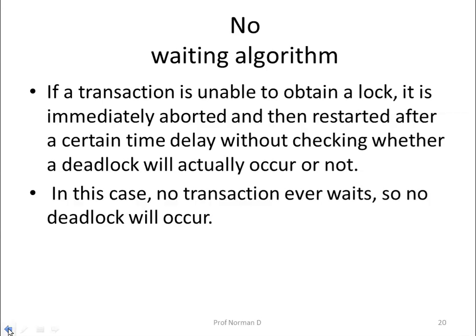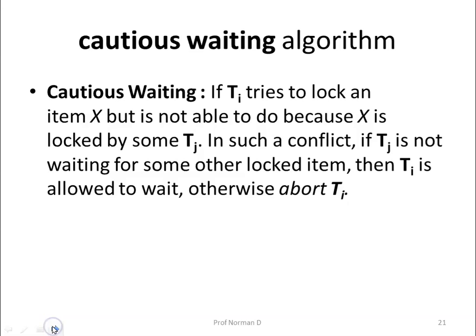With the no-waiting algorithm, no transaction ever waits, so no deadlock will ever occur. The next protocol is called the cautious waiting algorithm. In this algorithm, if a transaction Ti tries to lock item X but cannot because X is locked by Tj, then if Tj is not waiting for some other locked item, Ti is allowed to wait; otherwise Ti will be aborted.